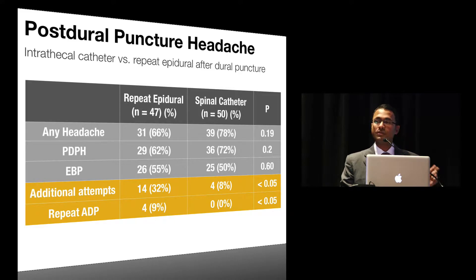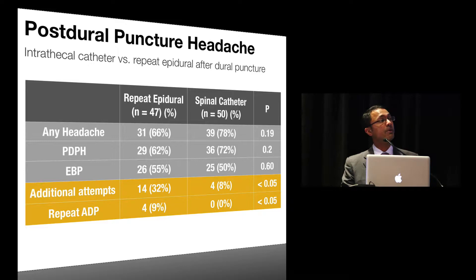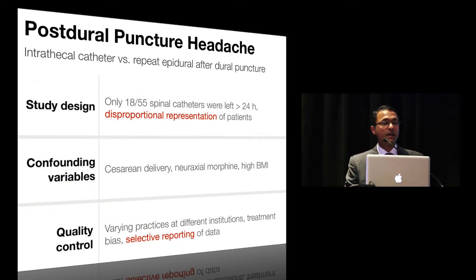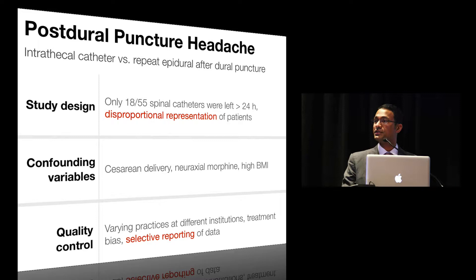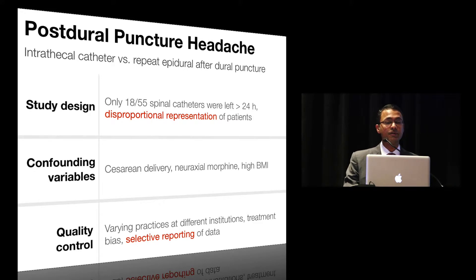However, repeat attempts at epidural placement and an increased incidence of accidental dural puncture were noted in the repeat epidural group. This raises a red flag — this study comes from the United Kingdom, where there is no attending supervision, so it's possible that a junior trainee anesthesiologist kept making the same mistakes, and this may not be applicable to contemporary American practice. Only 18 of the 55 spinal catheters were actually left in situ for more than 24 hours as recommended, and there was disproportional representation of patients — majority of the data came from only four institutions. Confounding variables including incidence of cesarean delivery, use of neuraxial morphine, and BMIs were not accounted for.